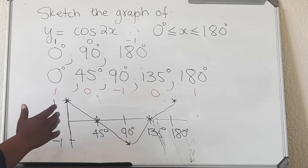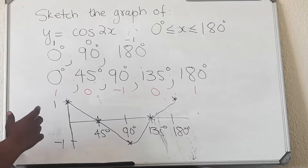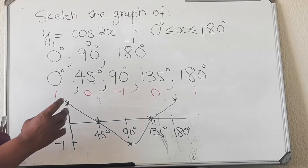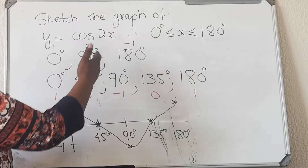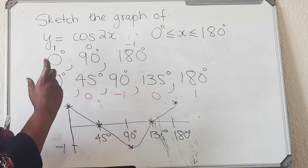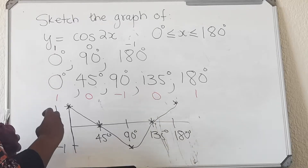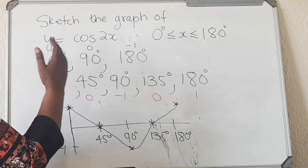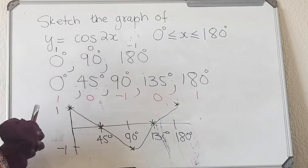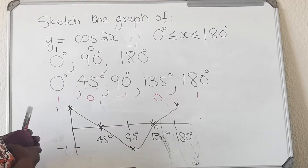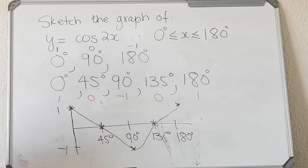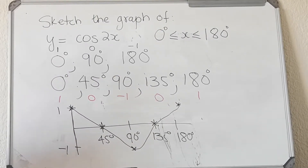You need to practice this because in a question paper they will change more than one thing — they will change A and K together in one question. Practice each transformation separately so that when they change A and P, you change A first, get the new coordinates, then change P, and then draw. It won't be a problem in an exam if you have practiced each function separately. That's the end of our lesson. Thank you.